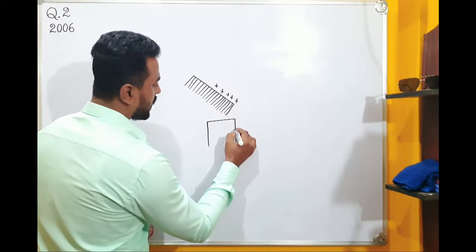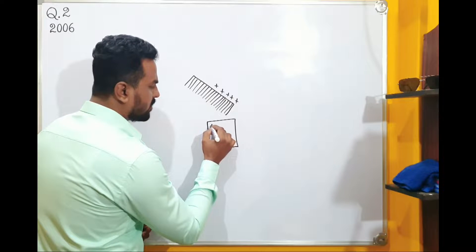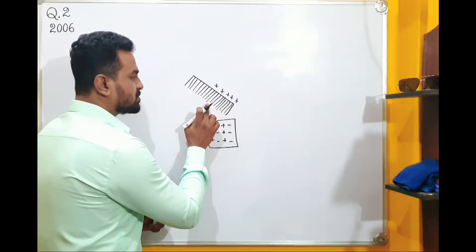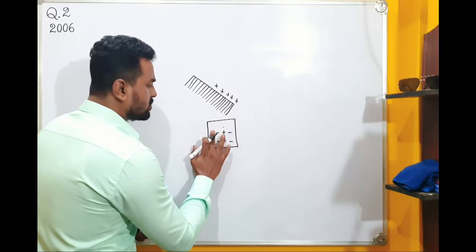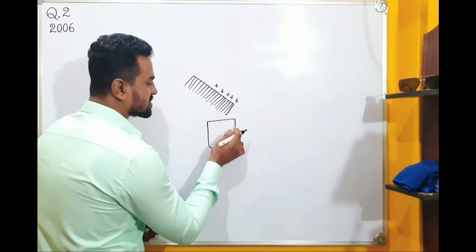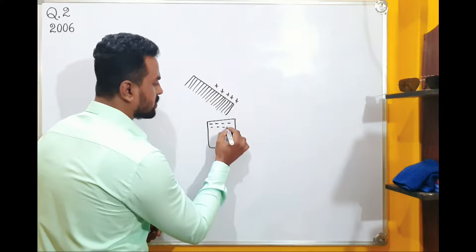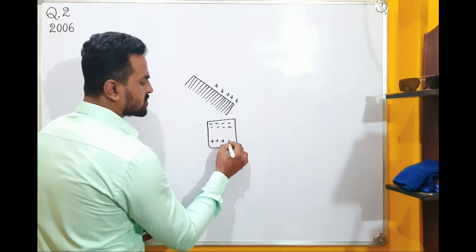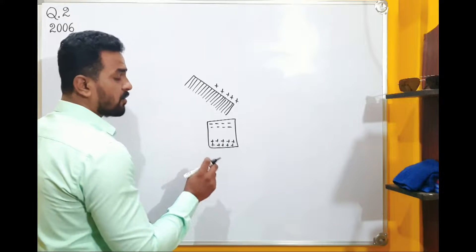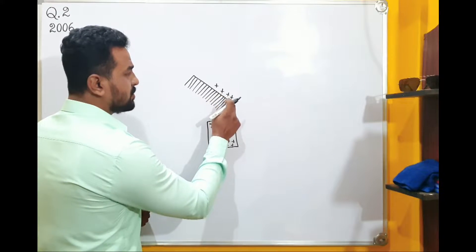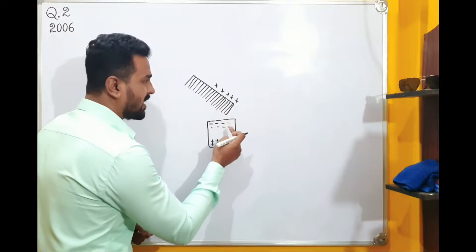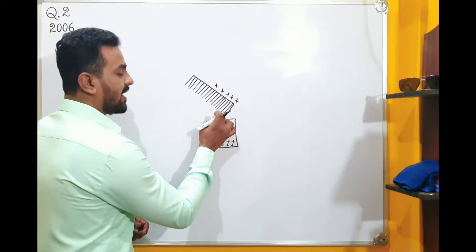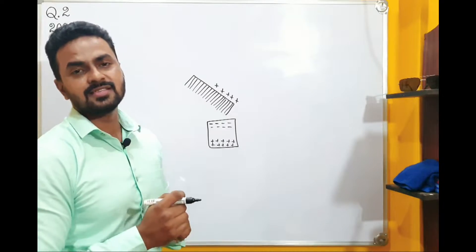When the positively charged comb is brought near a piece of paper, the paper has positive and negative charges present. The negative charges are attracted toward the comb because the center of negative charges shifts closer to it. The force between the positively charged comb and the negatively charged atoms is more than the repulsion from the positive atoms. So this part of the paper gets attached to the comb. The answer is found in option C.